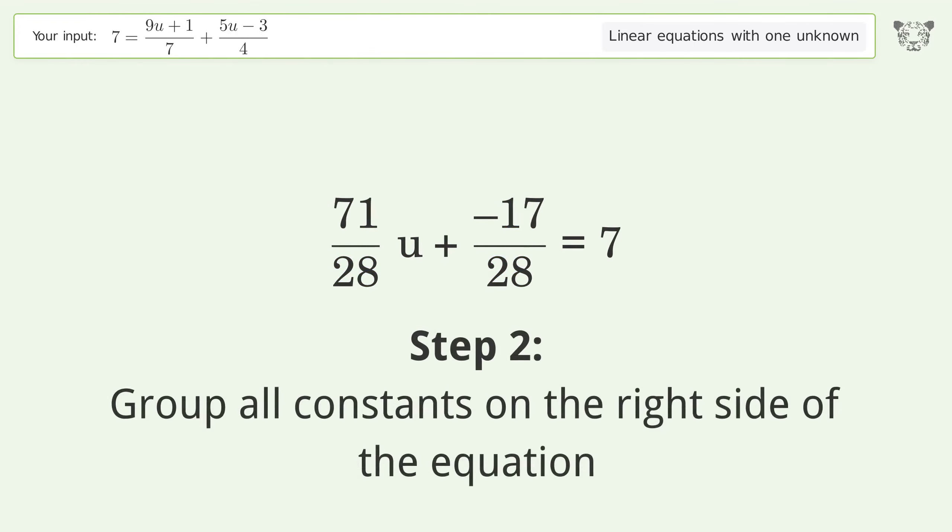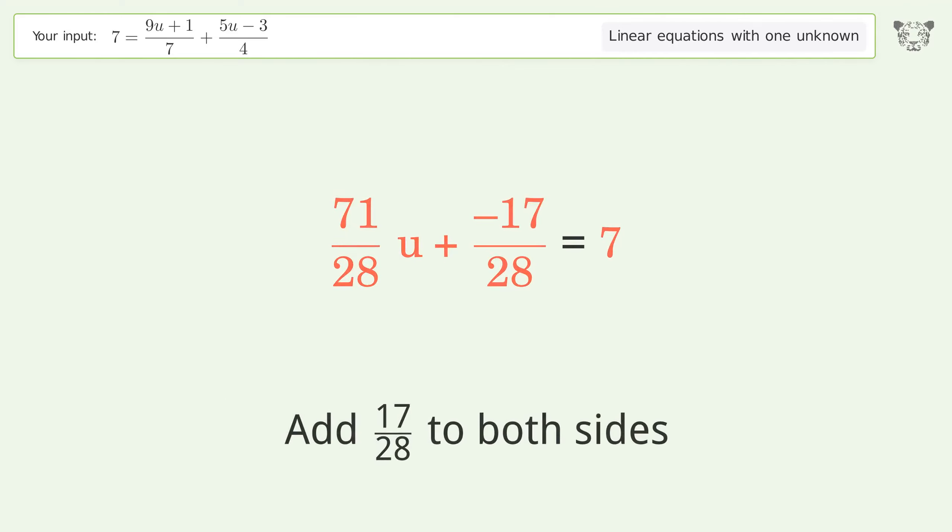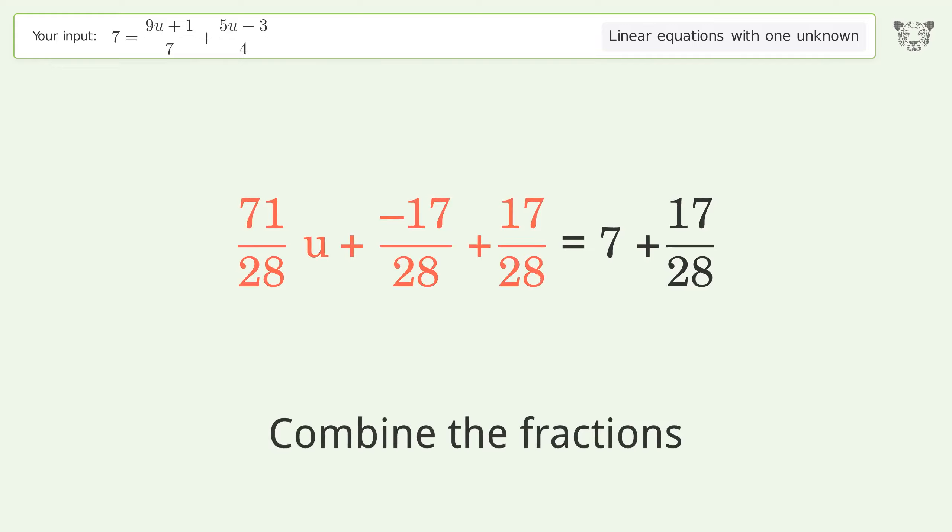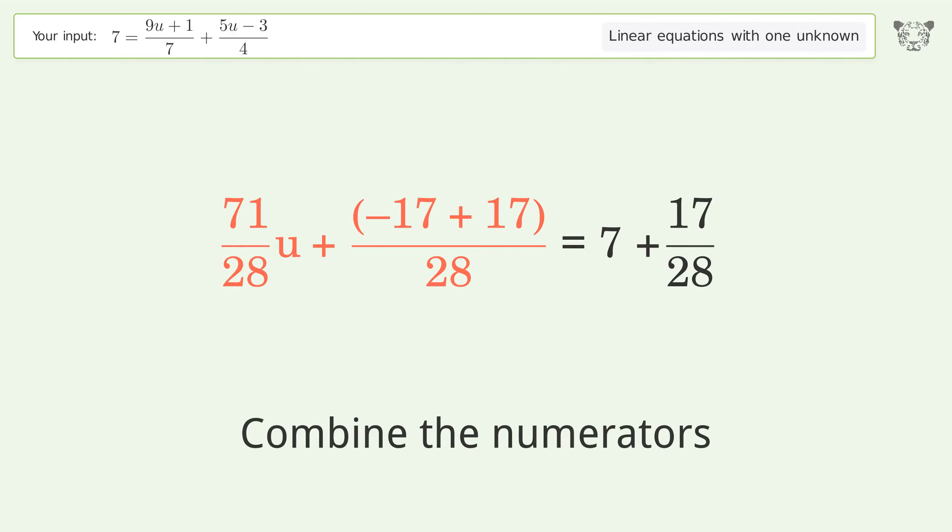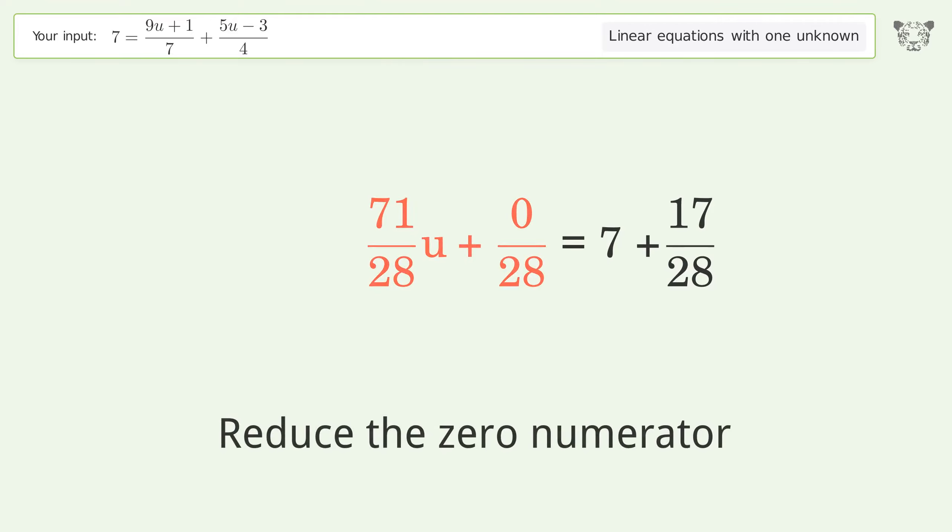Group all constants on the right side of the equation. Add 17 over 28 to both sides. Combine the fractions. Combine the numerators. Reduce the zero numerator.